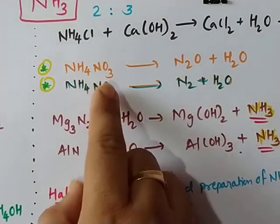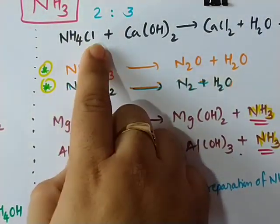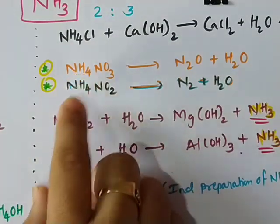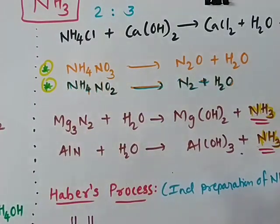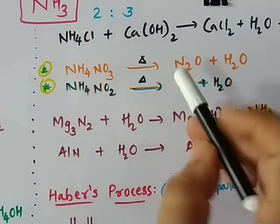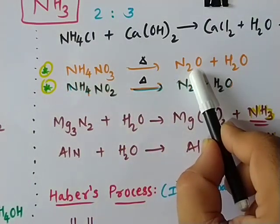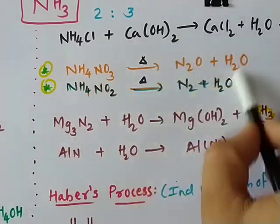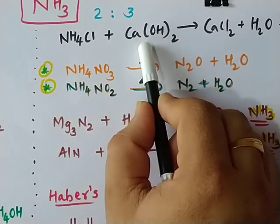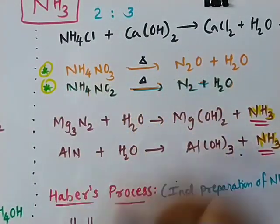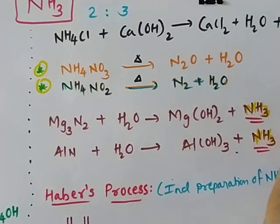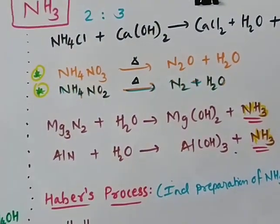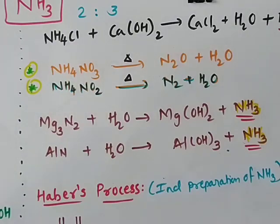In laboratory preparation, we can use different ammonium salts — ammonium chloride, ammonium sulfate — and different alkalis — Ca(OH)2, NaOH, or KOH. However, we cannot use ammonium nitrate or ammonium nitrite, because on decomposition ammonium nitrate releases N2O (laughing gas) and water vapor, and ammonium nitrite releases N2 and water vapor. These compounds decompose before reacting with the alkali, so no ammonia is produced.